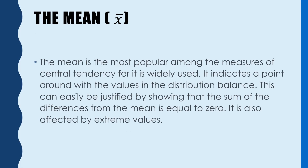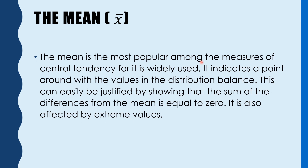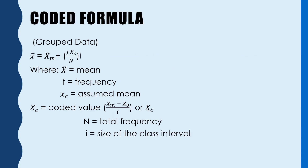We know that the mean is the most popular among the measures of central tendency, for it is widely used. It indicates a point around which the values in the distribution balance. This can easily be justified by showing that the sum of differences from the mean is equal to zero, and it is also affected by extreme values.